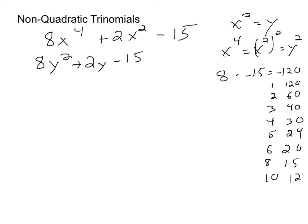8 different pairs. And we need to pick the one that is going to subtract to give us our middle coefficient of 2. And fortunately, there's really only one option there, 10 and 12.